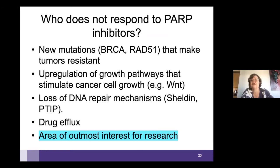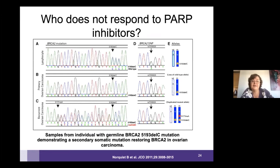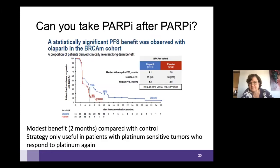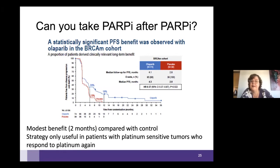Who does not respond to PARP inhibitors? New mutations can occur in BRCA or RAD51 making tumors resistant. PARP inhibitor treatment sometimes leads to escape mechanisms and other growth pathways. There are also drug efflux mechanisms where the PARP inhibitor is pumped out of the cell. Resistance is the hottest topic of research. Tumors with a BRCA mutation can acquire a second mutation that knocks out the good mutation, making them resistant.